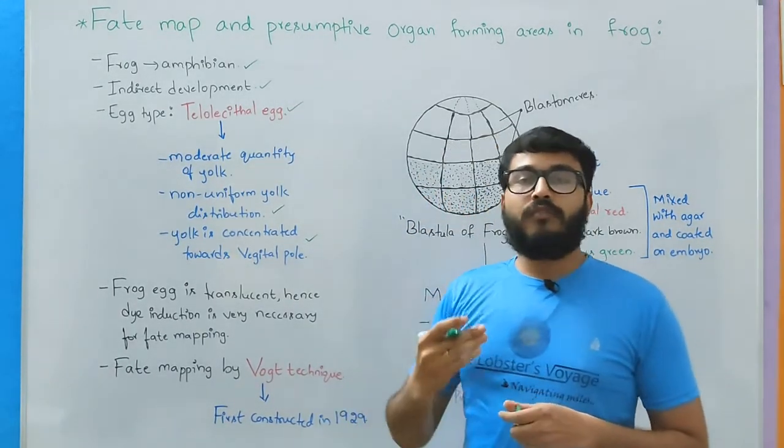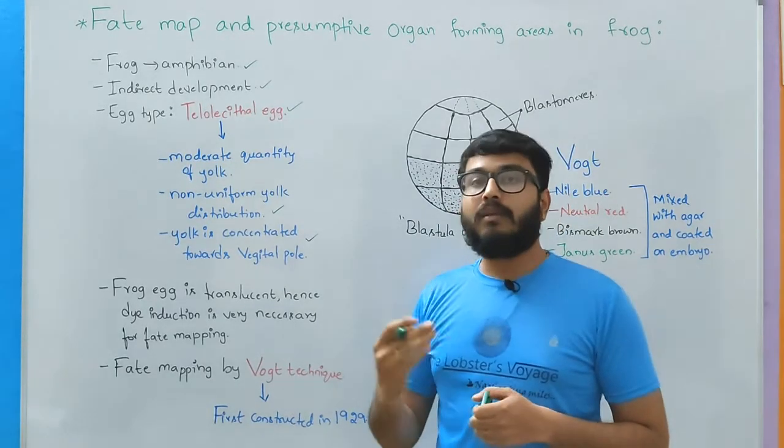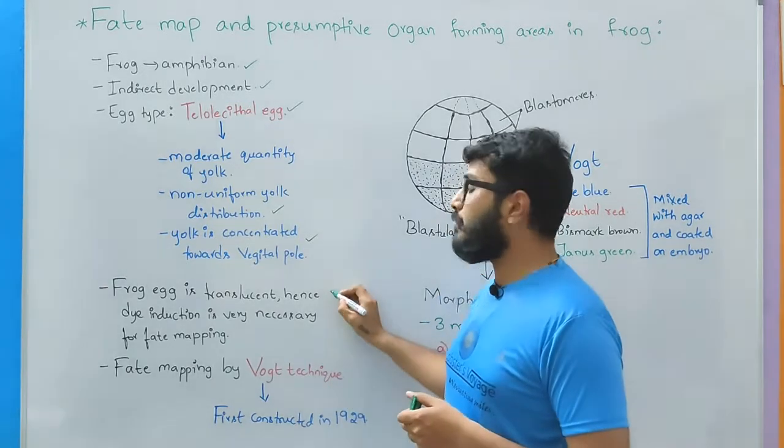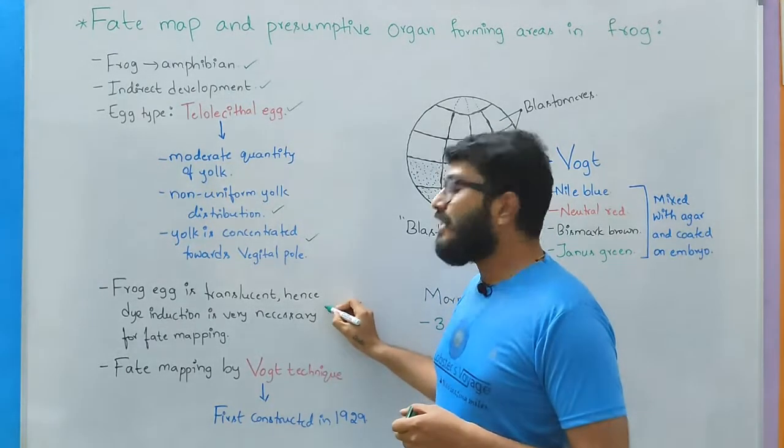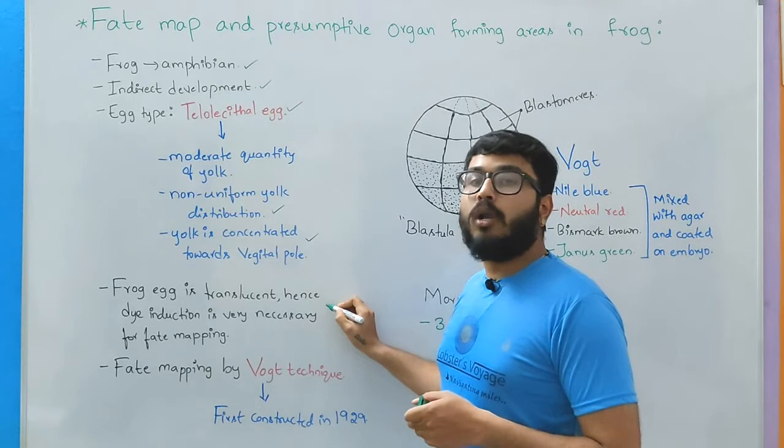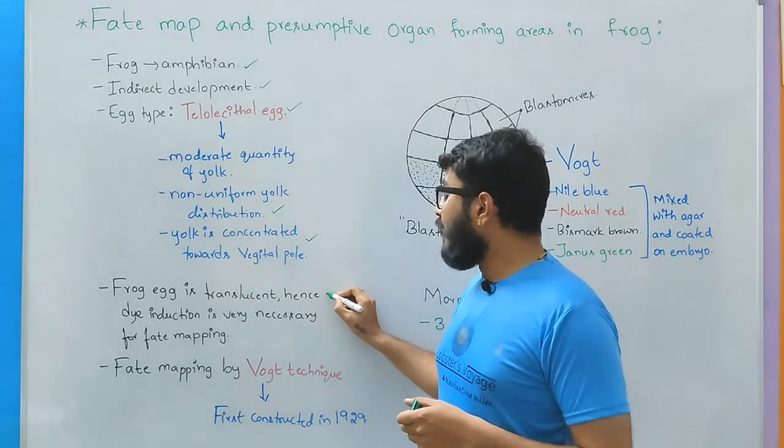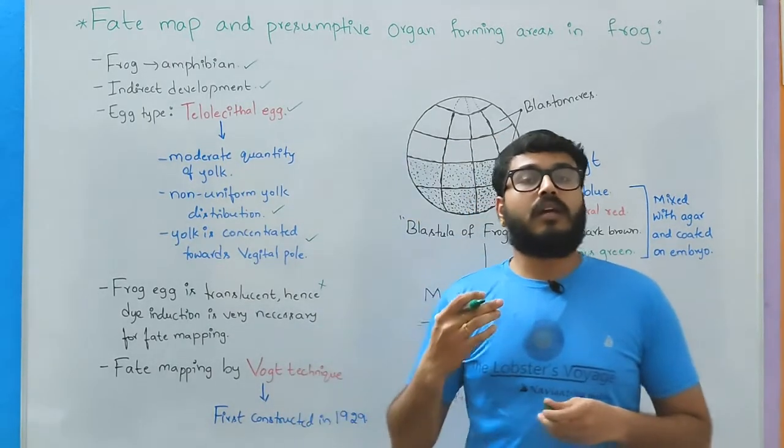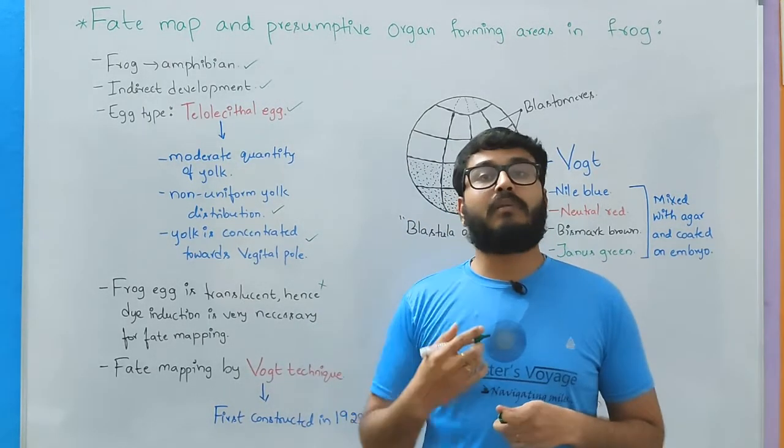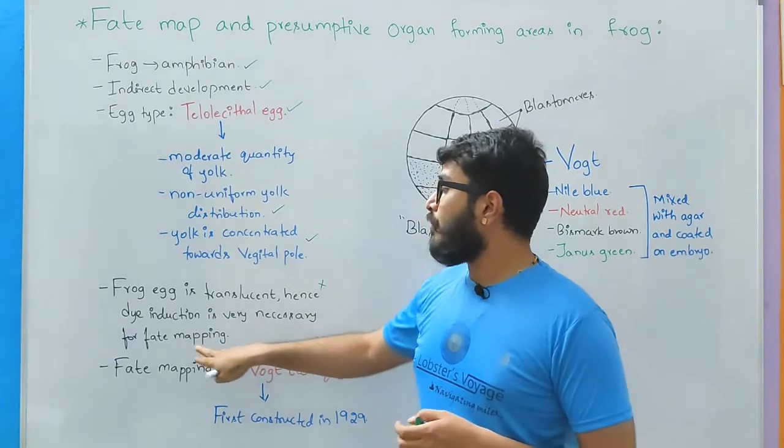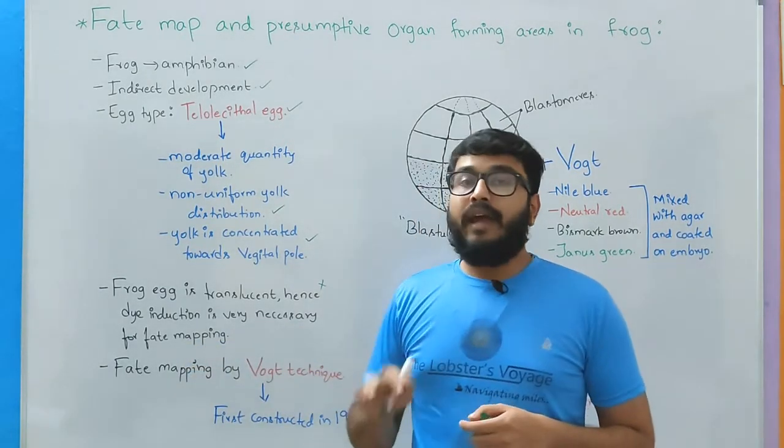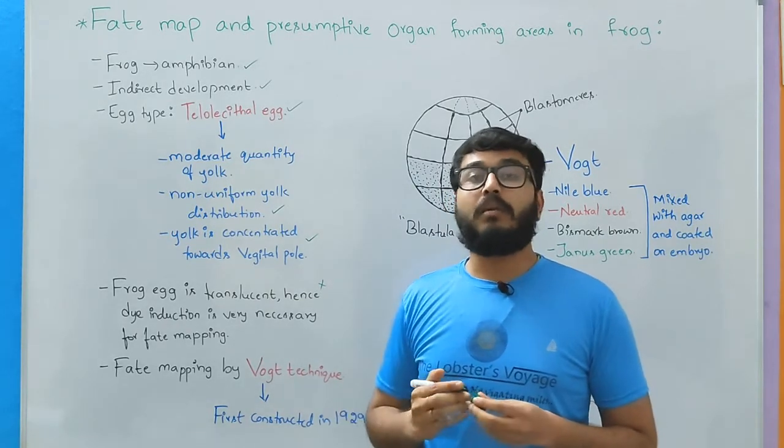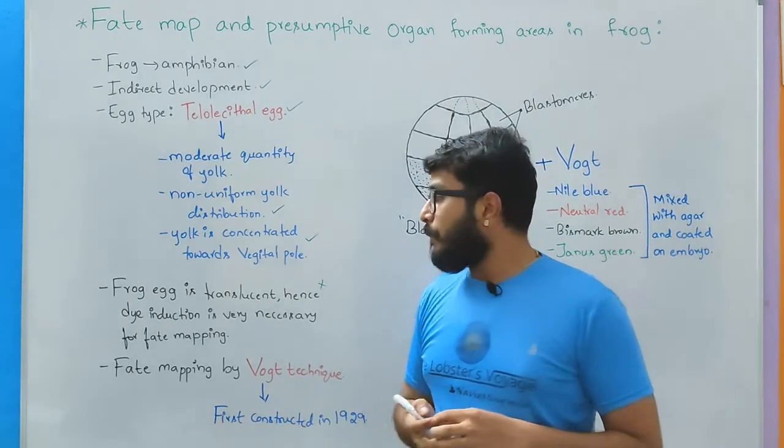Now egg in case of frog is not covered by calcareous shell, instead it is translucent, that is semi-transparent, and when it is present in the water medium it is almost impossible for anybody to identify its existence in the water. Therefore when we are about to construct the fate map it is important for us to understand and apply an artificial technique to understand the fate maps in case of frog embryo.